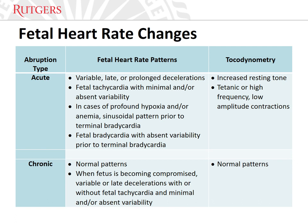A wide array of abnormal fetal heart rate patterns is possible, reflecting the underlying pathophysiology of abruption. In acute and severe abruption, there is often marked fetal bradycardia with absent variability, which is a preterminal fetal heart rate pattern. This fetal bradycardia can occur suddenly or can be heralded by variable, late, or prolonged decelerations. Fetal tachycardia and minimal or absent variability may or may not be present. In cases of decreased fetal-placental blood flow and hypoxia, sinusoidal fetal heart rate patterns can be seen prior to terminal bradycardia. Abnormalities in the uterine contraction pattern, such as titanic or high-frequency, low-amplitude contractions, may also be present.